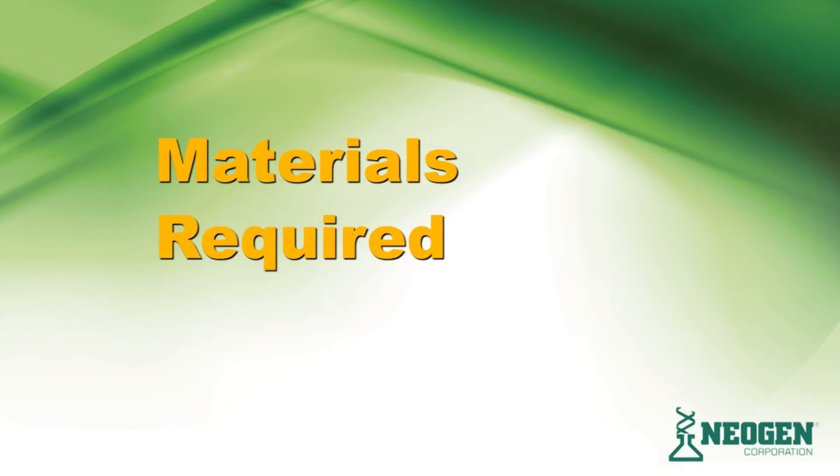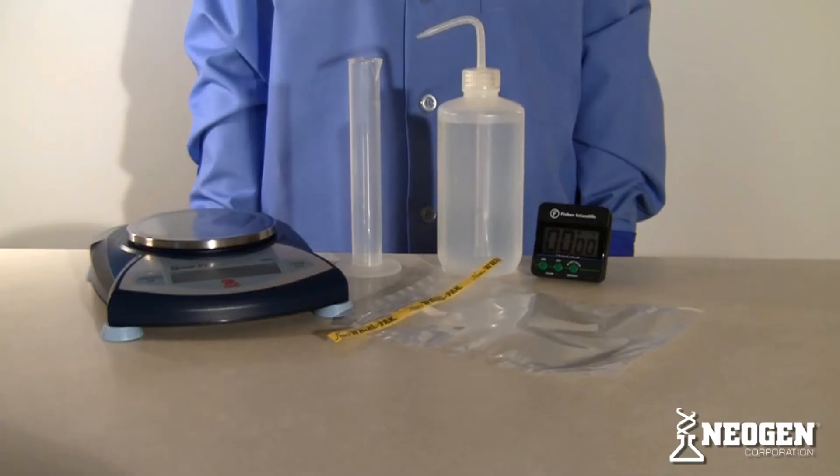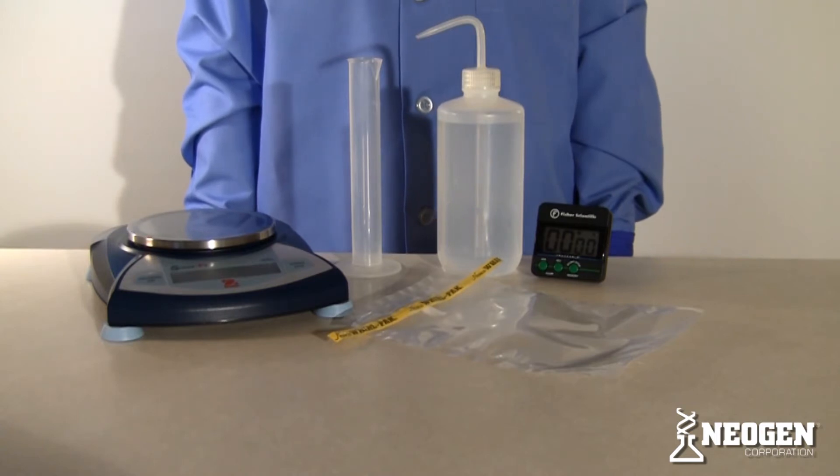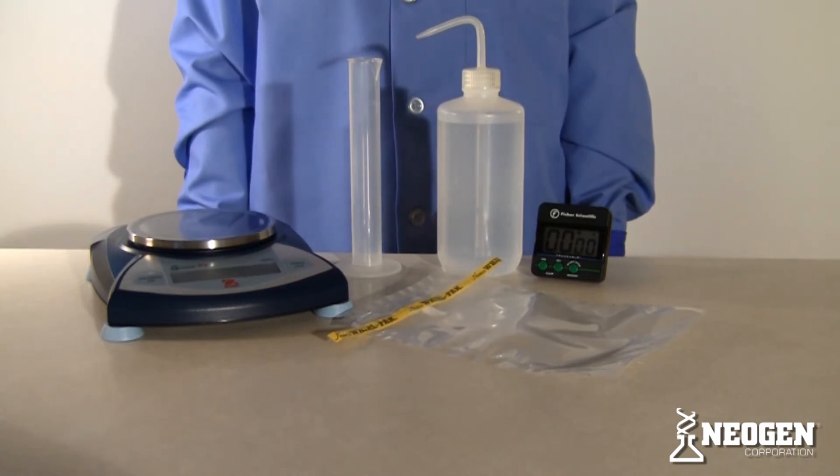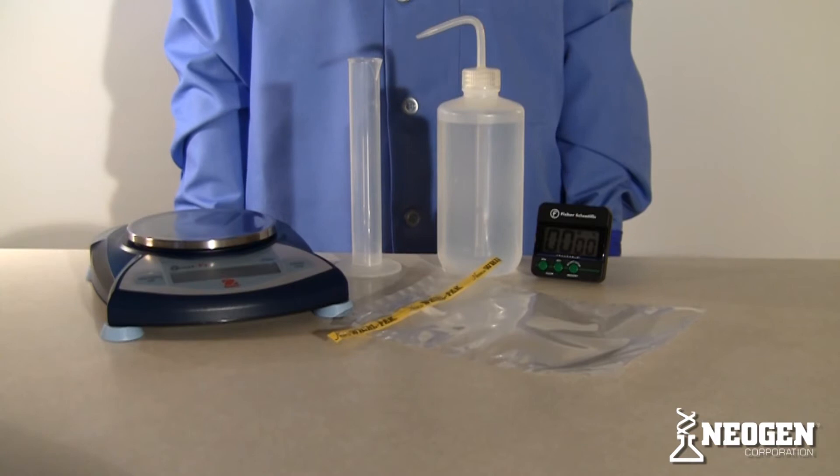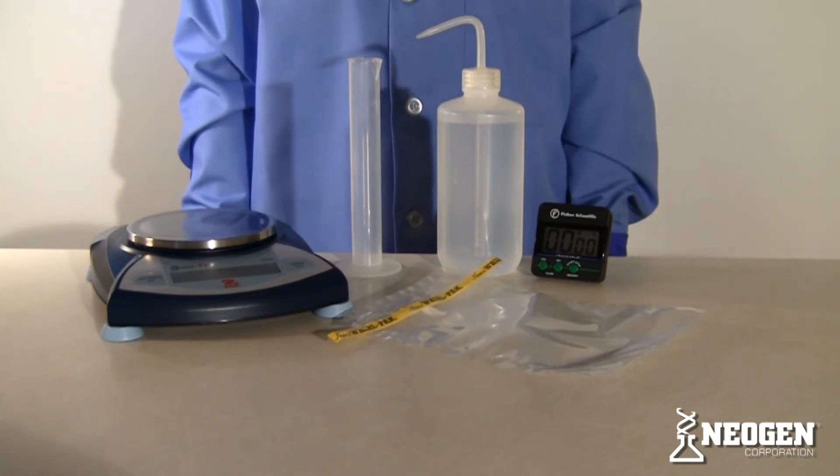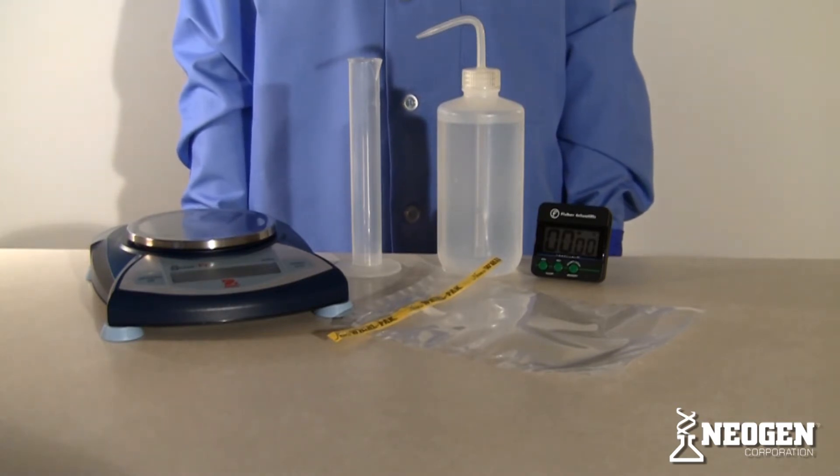Materials required, but not provided. Sample extraction requires glass or plastic containers or stomacher bags. In this presentation, we will be using stomacher bags. A wash bottle filled with deionized water is recommended to perform the paddle washing steps, although paddles can be washed under cold running tap water. You will also need a scale to measure the sample, a graduated cylinder to measure water, and a timer.